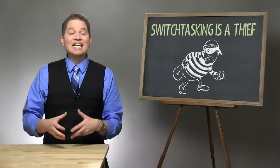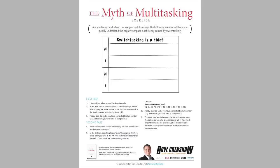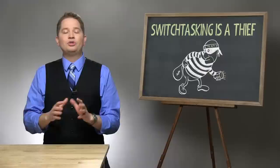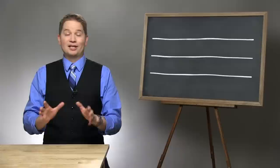It is a thief of time, it is a thief of money, it is a thief of your sanity, and you're going to experience firsthand what I mean in this little exercise. You'll need to download and print out the exercise PDF on this page, or, if that's too hard to do, you can simply take a piece of paper, turn it sideways, and draw three lines across it so that you have a piece of paper with four rows.